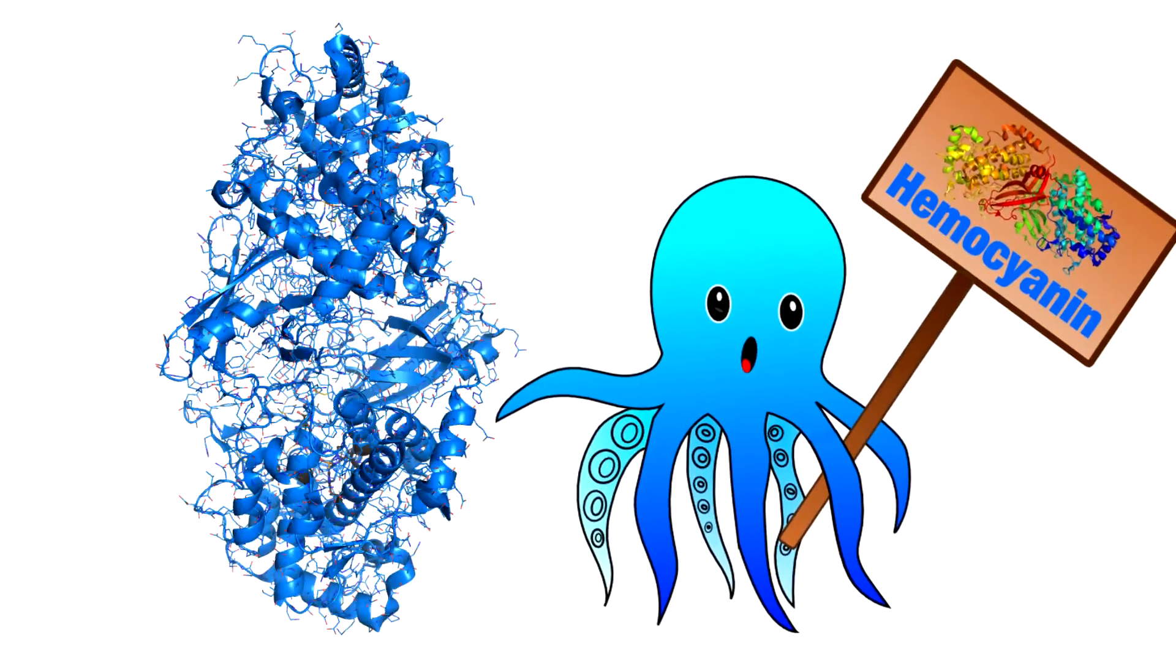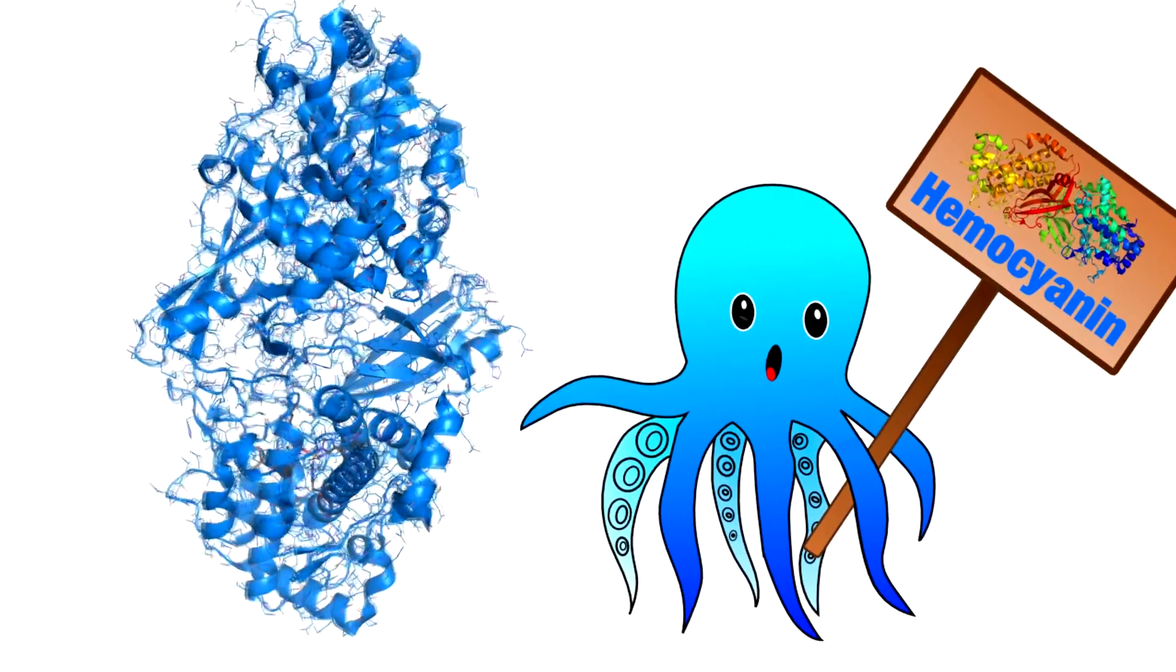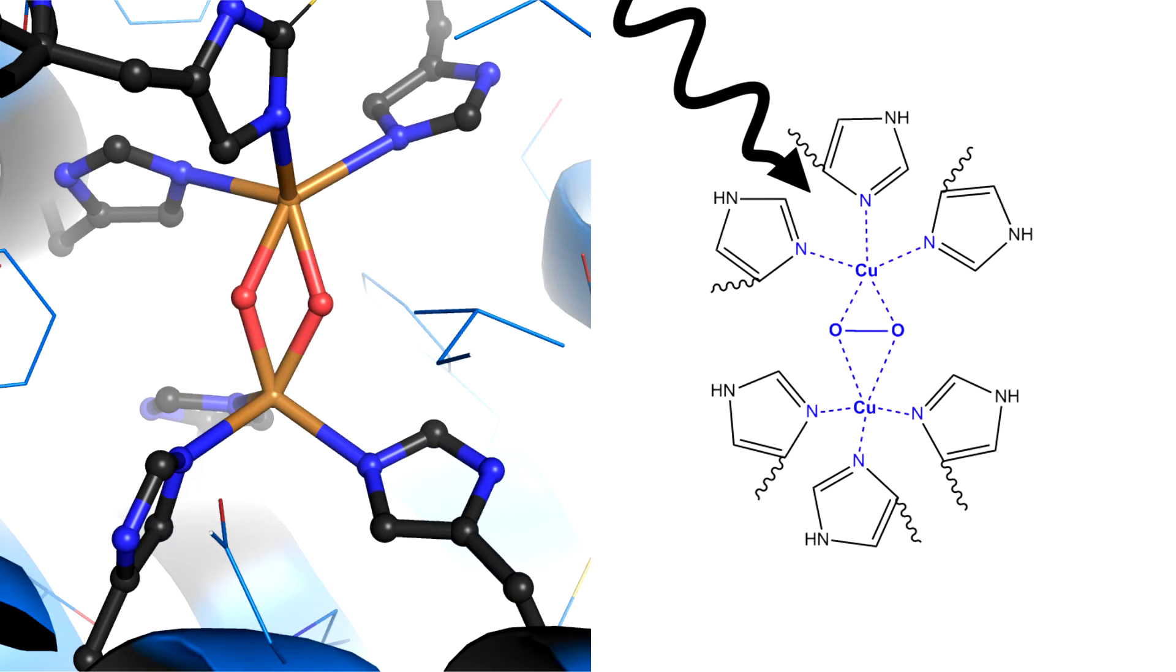The protein hemocyanin. Inside the hemocyanin protein we can find this two-centered oxygen-copper complex, which absorbs visible light and gives the whole protein a bright blue color.